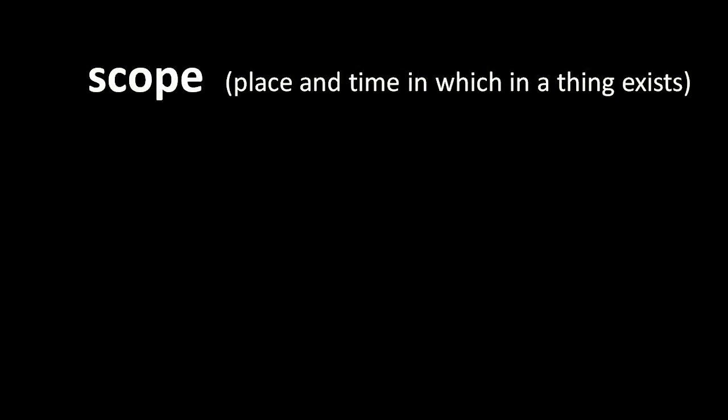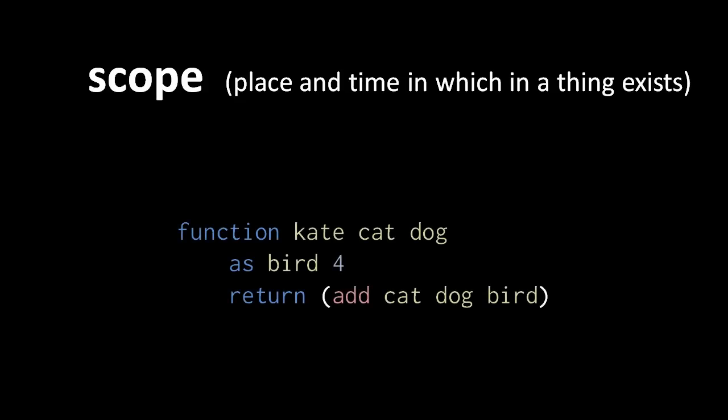In programming languages, the term scope is used to refer to both the place in code and the time during execution where and when a thing exists. The variables of a function are said to have local scope — to be local to the function in which they are found. So here, cat, dog, and bird are all local variables of the function k. Parameters really are just local variables; they're only special in the way they get their initial values from the arguments to the function calls. When we say that cat, dog, and bird are local to the scope of kate, this means that they exist only in that function, and so cannot be used outside the function or in another function.